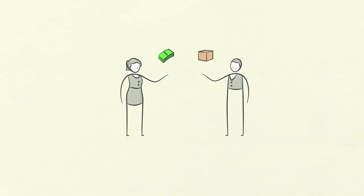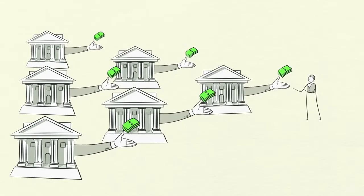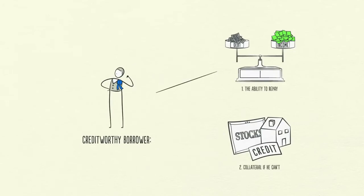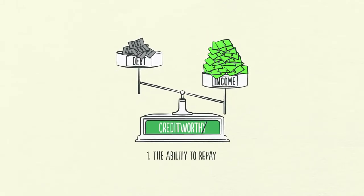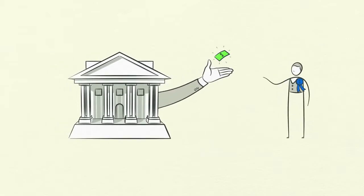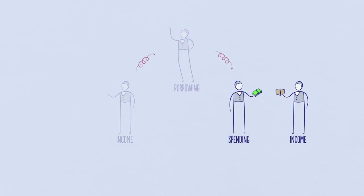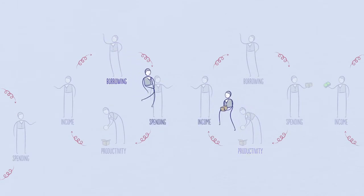Every dollar you spend, someone else earns. And every dollar you earn, someone else has spent. So when you spend more, someone else earns more. When someone's income rises, it makes lenders more willing to lend him money, because now he's more worthy of credit. A credit-worthy borrower has two things: the ability to repay and collateral. Having a lot of income in relation to his debt gives him the ability to repay. In the event that he can't repay, he has valuable assets to use as collateral that can be sold. So increased income allows increased borrowing, which allows increased spending. And since one person's spending is another person's income, this leads to more increased borrowing, and so on. This self-reinforcing pattern leads to economic growth and is why we have cycles.